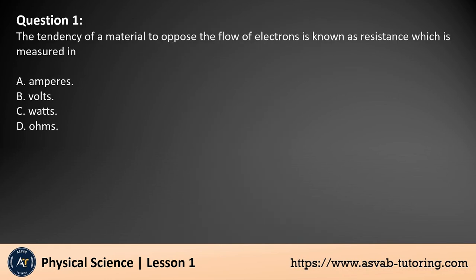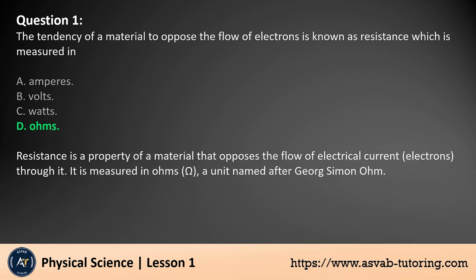Question 1: The tendency of a material to oppose the flow of electrons is known as resistance which is measured in A. Amperes, B. Volts, C. Watts, D. Ohms. The answer is D. Resistance is a property of a material that opposes the flow of electrical current or electrons through it. It is measured in ohms, a unit named after George Simon Ohm.